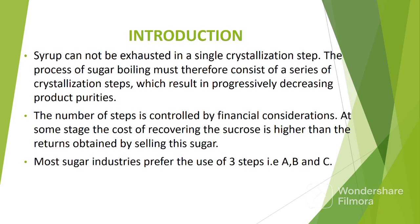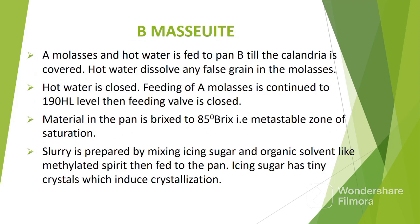In the previous video, I had covered preparation of A masecuite, and today I'm going to cover B and C. Let's start with preparation of B masecuite. A molasses separated from A masecuite has a purity of around 70%, so it is pumped to pan B to prepare B masecuite. Below is the procedure that is followed to prepare B masecuite.